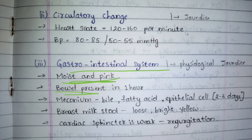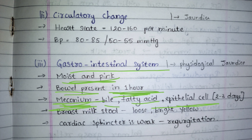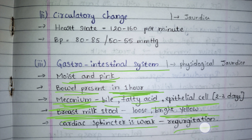The first stool will be passed within one hour after birth and is known as meconium. Meconium consists of bile, fatty acids, and epithelial cells. For the first one to three days, meconium will be passing out as stool. Even after feeding begins, meconium continues for two to three days, after which breast milk stool will appear — loose and bright yellow in color. The cardiac sphincter of the baby is very weak, creating a chance of regurgitation. To prevent this, the mother places the baby on her shoulder and taps the baby's spine so the milk settles into the stomach.